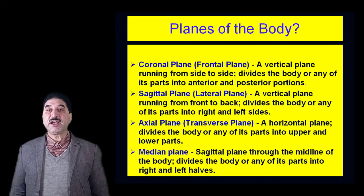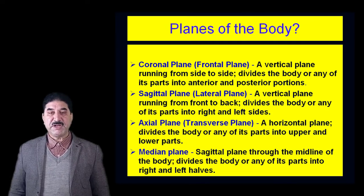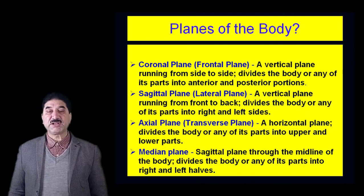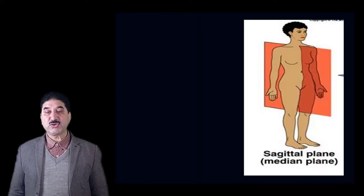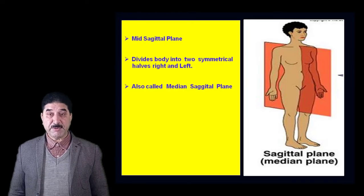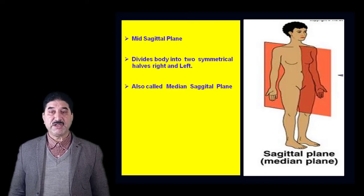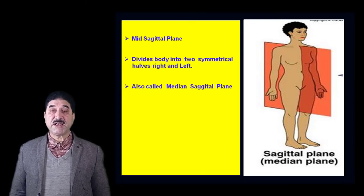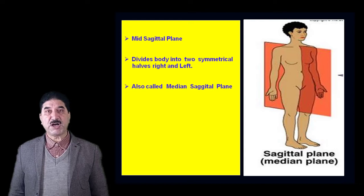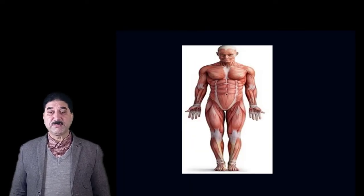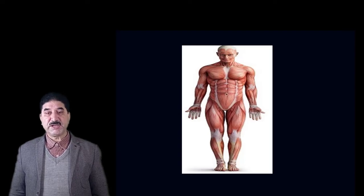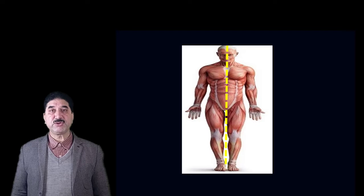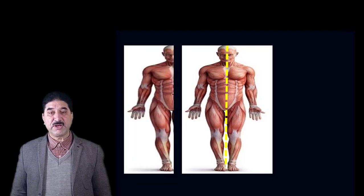The median plane is a sagittal plane through the midline of the body that divides the body into right and left halves. The mid-sagittal plane divides the body into two symmetrical halves — right and left — which are mirror images of each other. It is also called the median sagittal plane. If we pass a plane through the midline in an anterior-posterior direction, this plane is called the mid-sagittal plane and it divides the body into two symmetrical right and left halves.